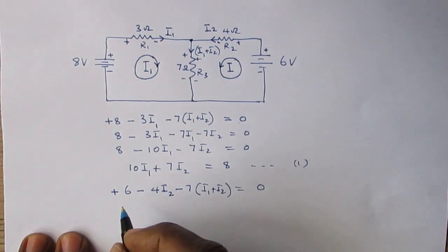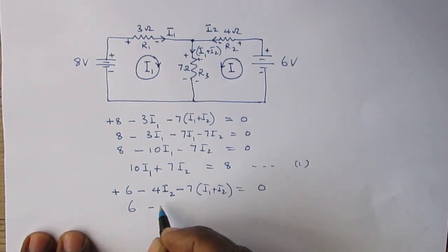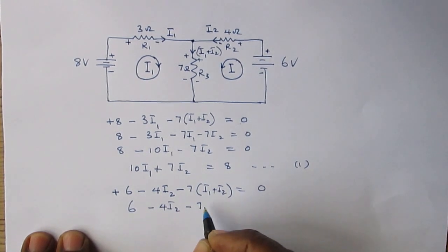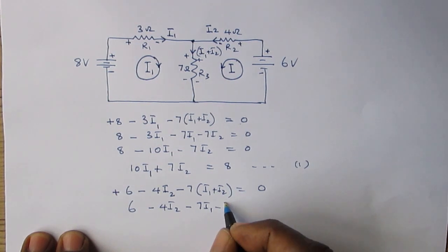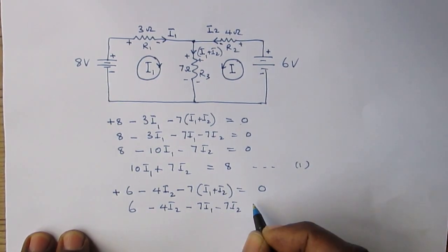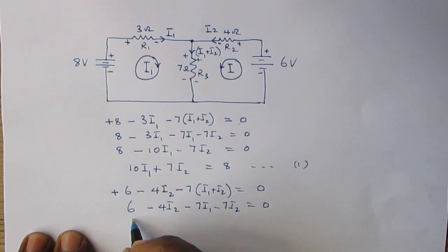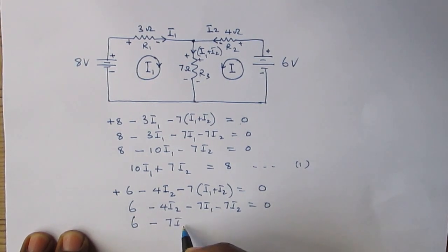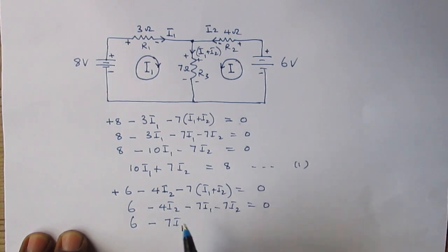So we have 6 minus 4I2 minus 7I1 minus 7I2 equals 0, or 6 minus 7I1 minus 4I2 minus 7I2, that's minus 11I2, equals 0.